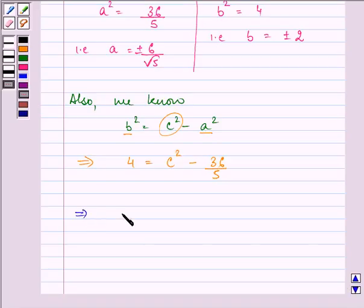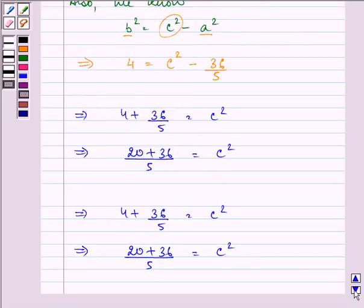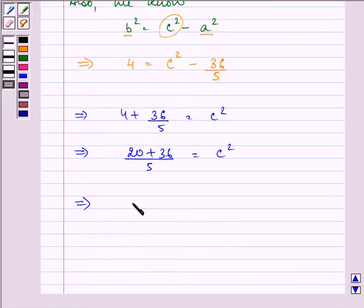That further implies 4 + 36/5 = c². That is (20 + 36)/5 = c², which gives us the value of c² as 56/5. And hence the value of c is 2√14/√5.